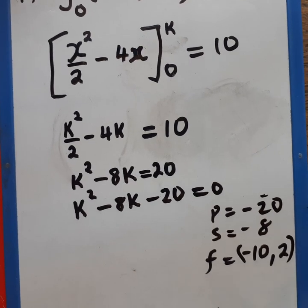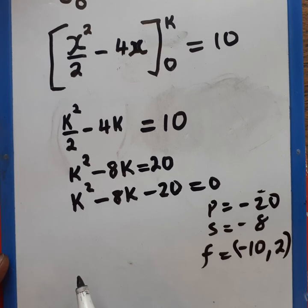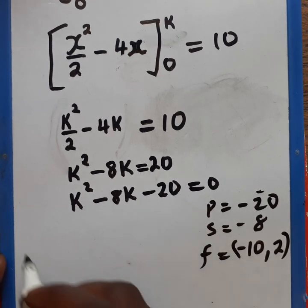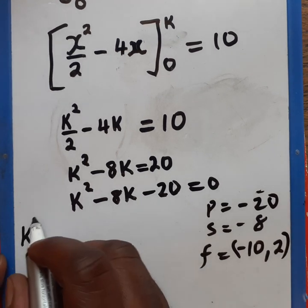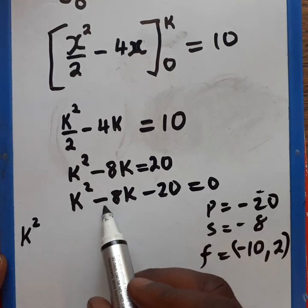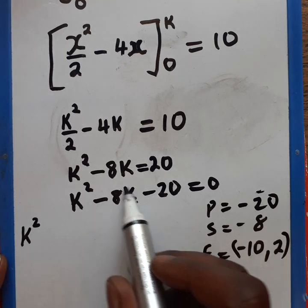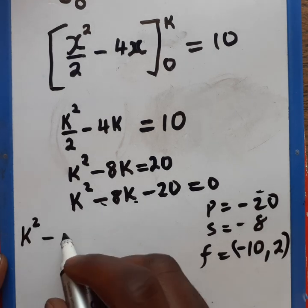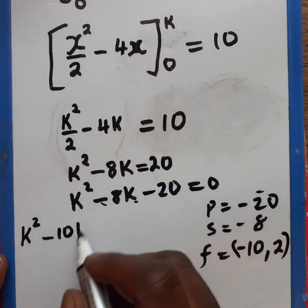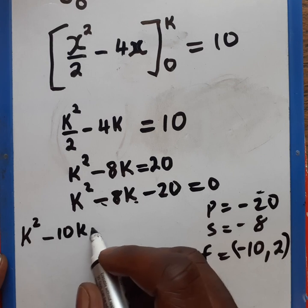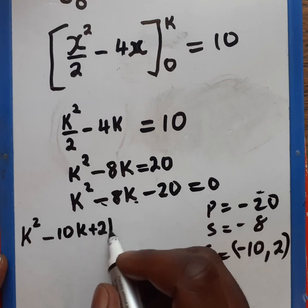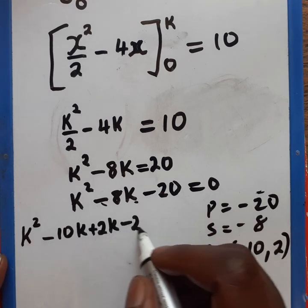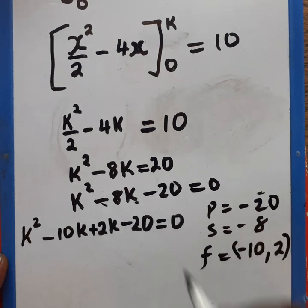So now having done this, we can go further now and factorize. So how do we do it? We need to expand this part here of the sum using the factors. So we have k squared minus 10k plus 2k minus 20 equals 0.